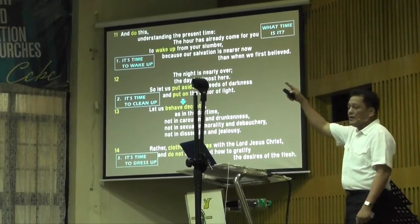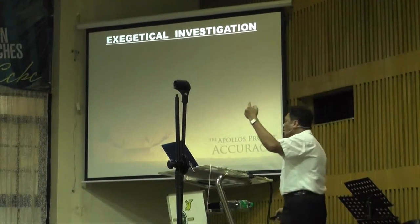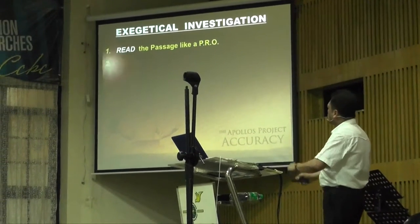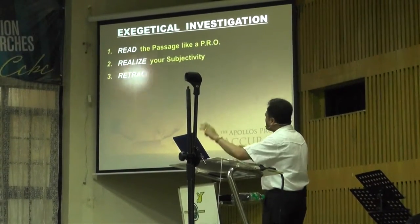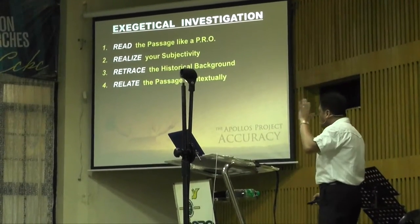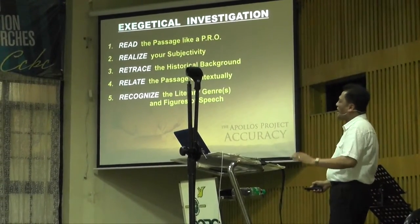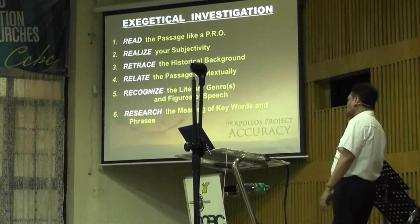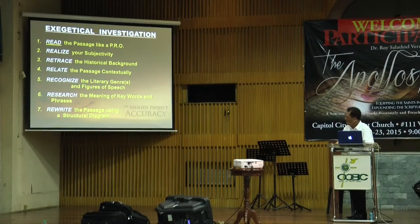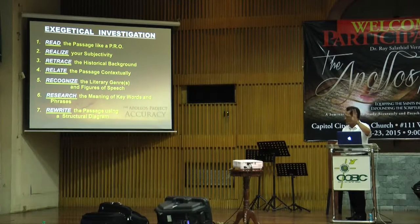Here's the summary: exegetical investigation has seven R's. First R: read the passage. Second R: realize your subjectivity. Third R: retrace the historical background. Fourth R: relate the passage contextually. Fifth R: recognize the literary genre and figures of speech. Sixth R: research the minor keywords. Seventh R: rewrite the passage using a structural diagram. Read like a pro, realize, retrace, relate, recognize, research, and rewrite.